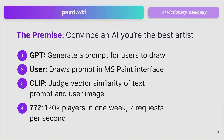The premise: we have GPT generate a prompt that users can draw. Users then draw on a Microsoft Paint-like interface — just a canvas we found open source. And then CLIP judges the vector similarity of the text embedding of the prompt and the image embedding. Whichever embeddings are most similar per CLIP's judgment rank top on the leaderboard. People love games and the internet, so this went mini-viral across Reddit and Hacker News in its first week.